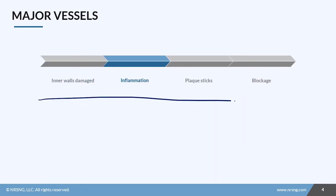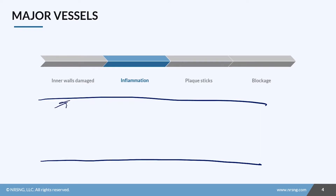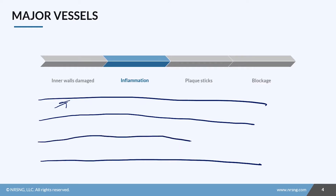During the second phase, inflammation is going to actually occur. We've got damage on the walls already, so it's going to start to thicken, scar tissue will form, and it's going to create a much narrower pathway for blood to get through.